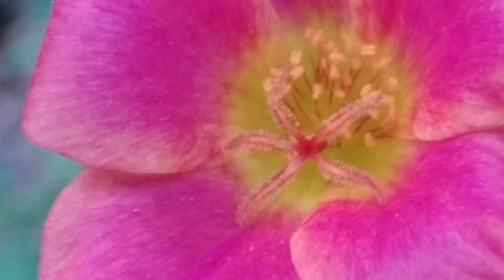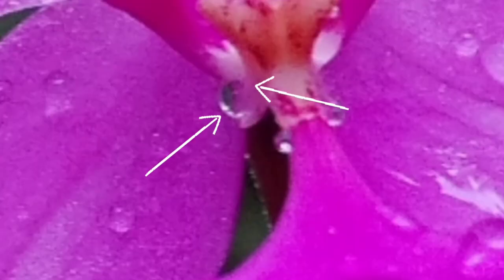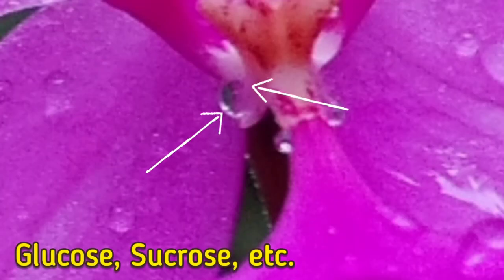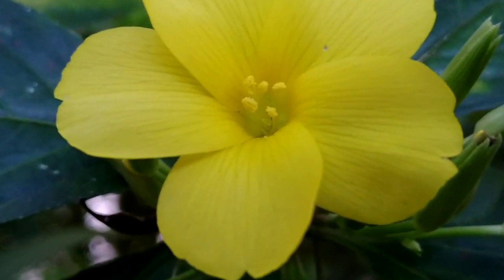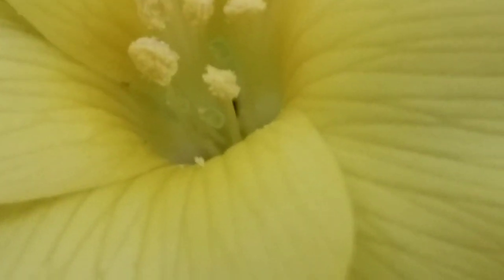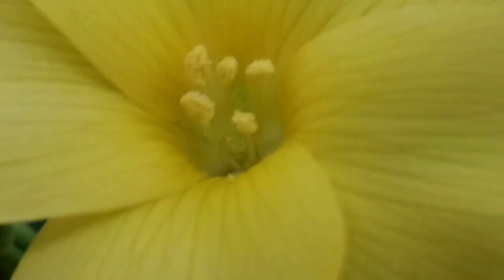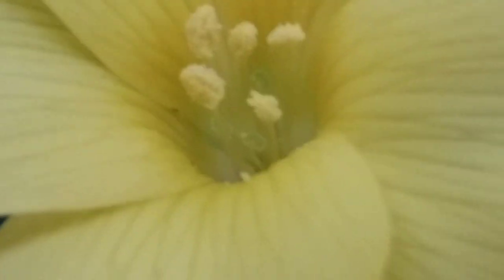The next question is: how is nectar produced? Nectar is produced by certain specialized glands called nectaries. They use certain kinds of sugar, like glucose, to make nectar, and also use other ingredients to attract pollinators and to avoid predators. There are two kinds of nectaries — one is located inside the flower and one is on the outside. Both of these nectaries play an important role in the flower's life.